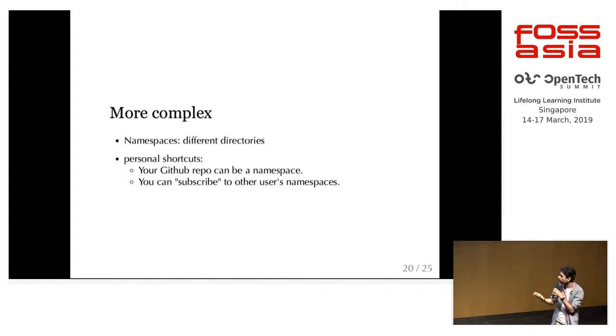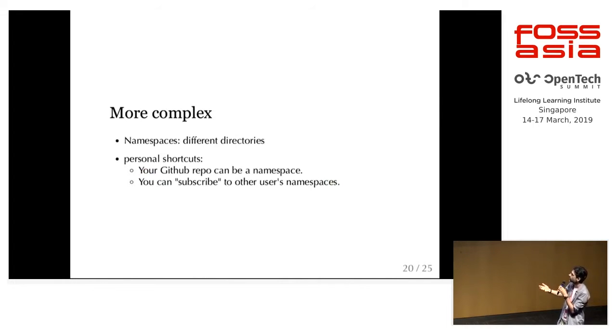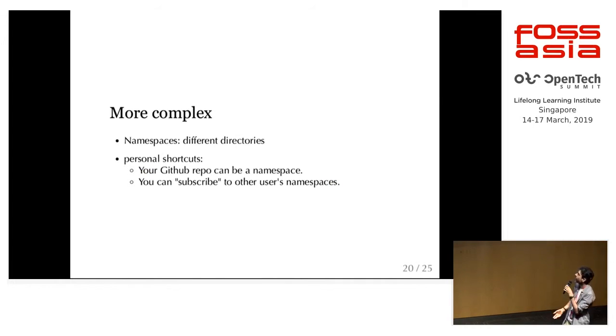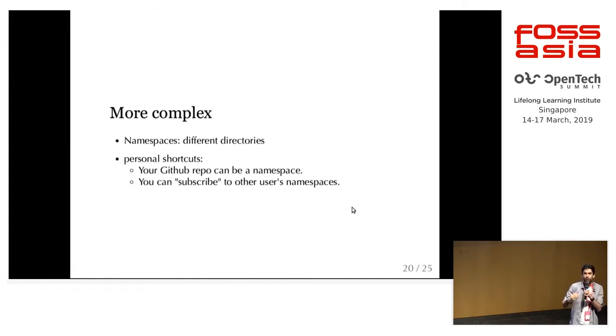Of course it's a bit more complex. We have namespaces with multiple fetches, not just one. We also have personal shortcuts — your GitHub repo can be a namespace, and you can subscribe to other people's namespaces.